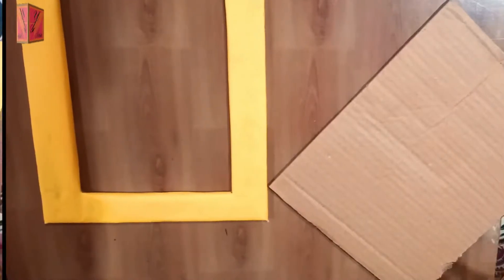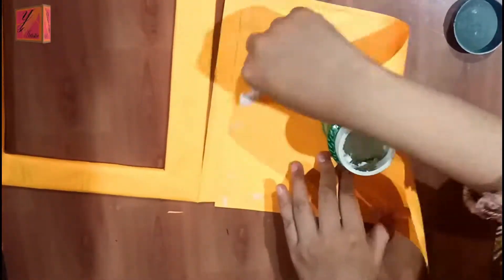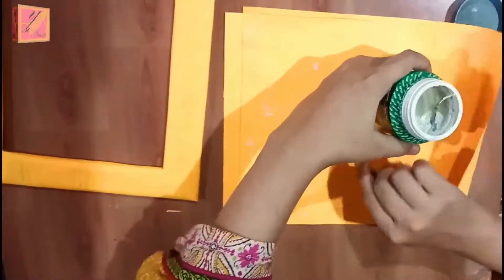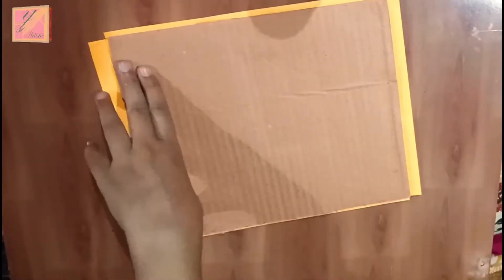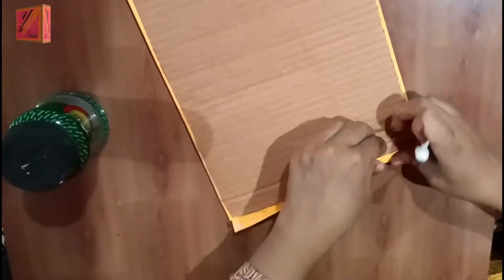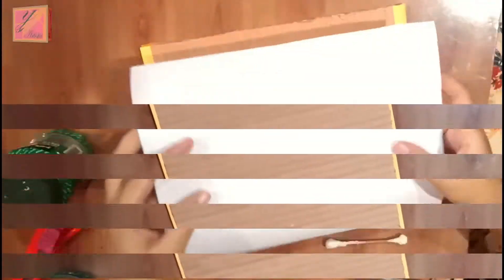We have to drop it on the other side. Now we will take another piece. We will cover it on the other side. Color paper will be the same. This will be our full cover.